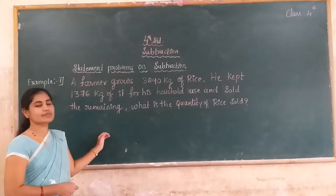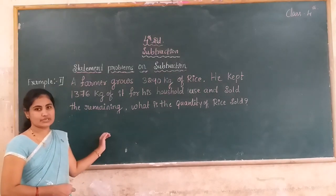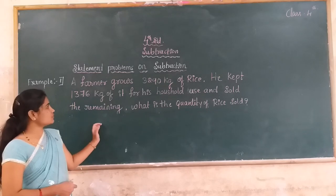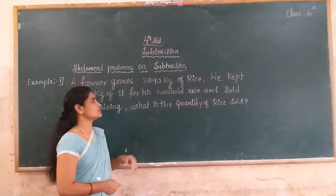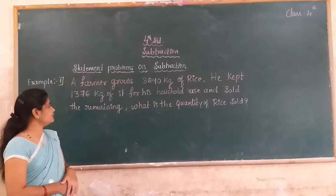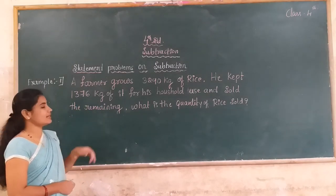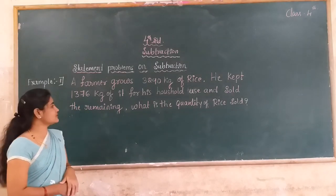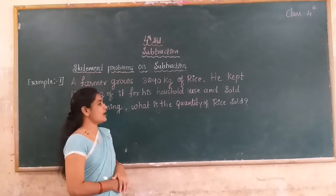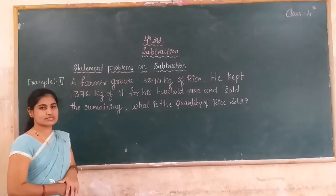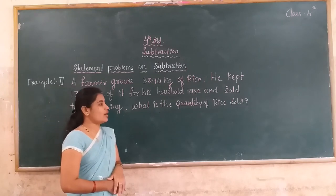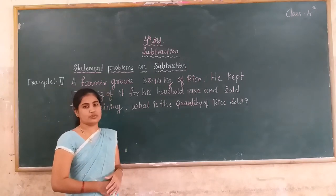Dear students, carefully read the question and identify what is given. First, you will write what is given in the question, then you solve the subtraction. The farmer grows 3,490 kg of rice. He kept 1,376 kg of rice for his household use and sold the remaining rice. What is the quantity of rice he sold?